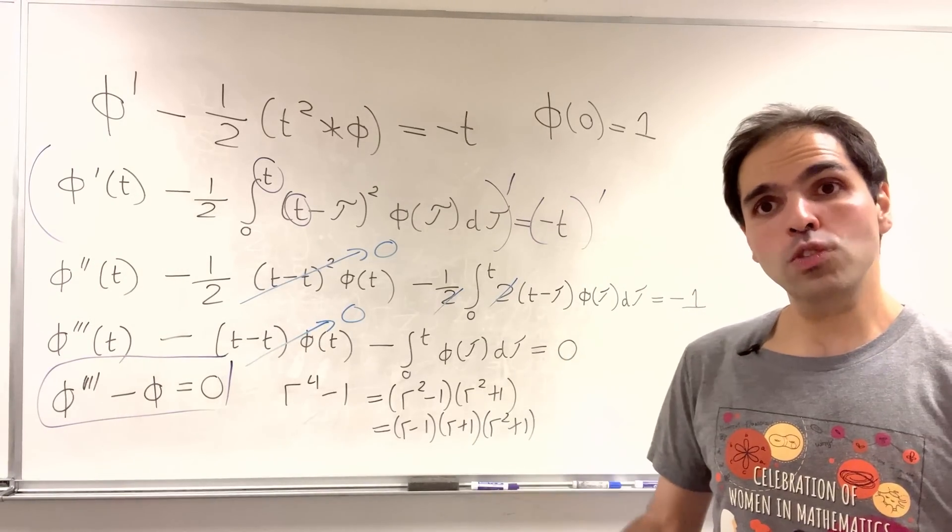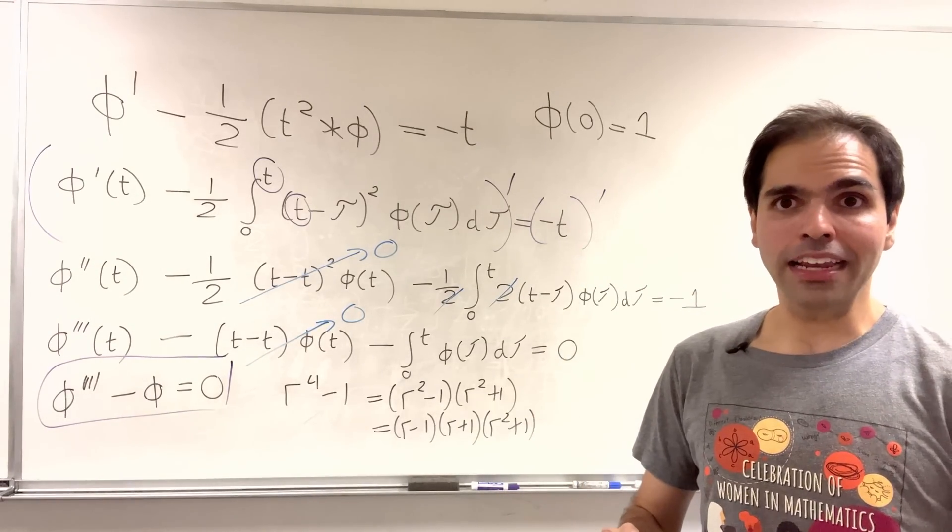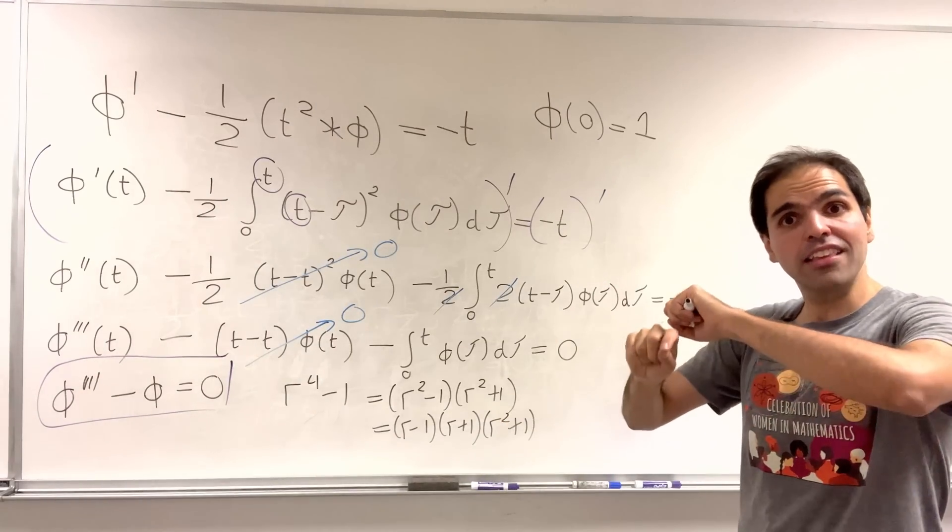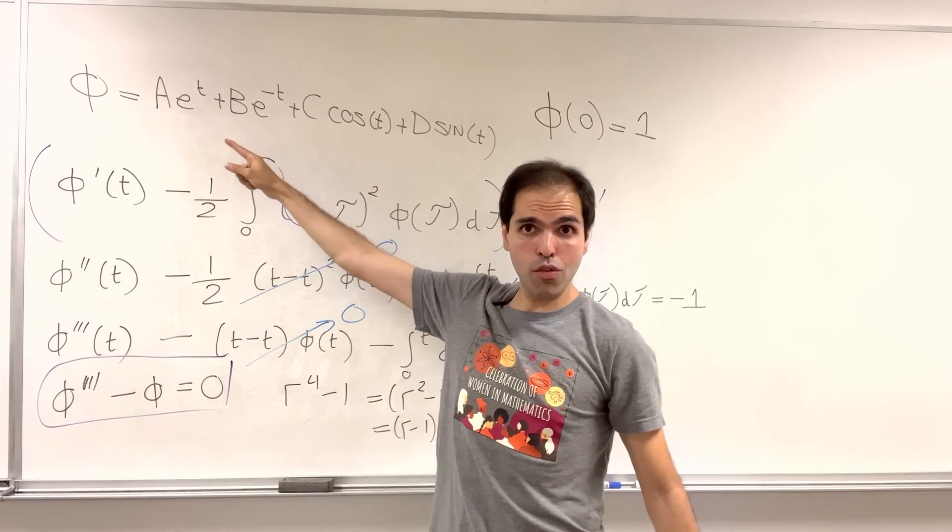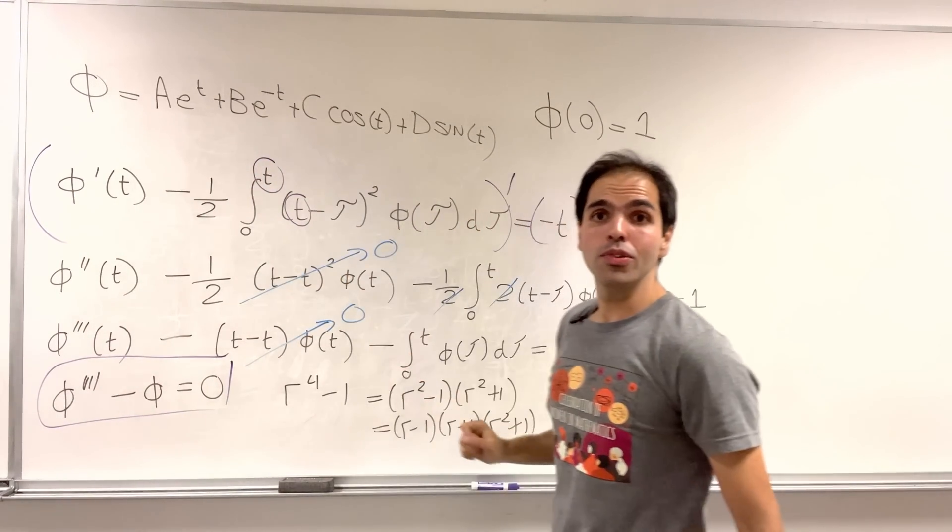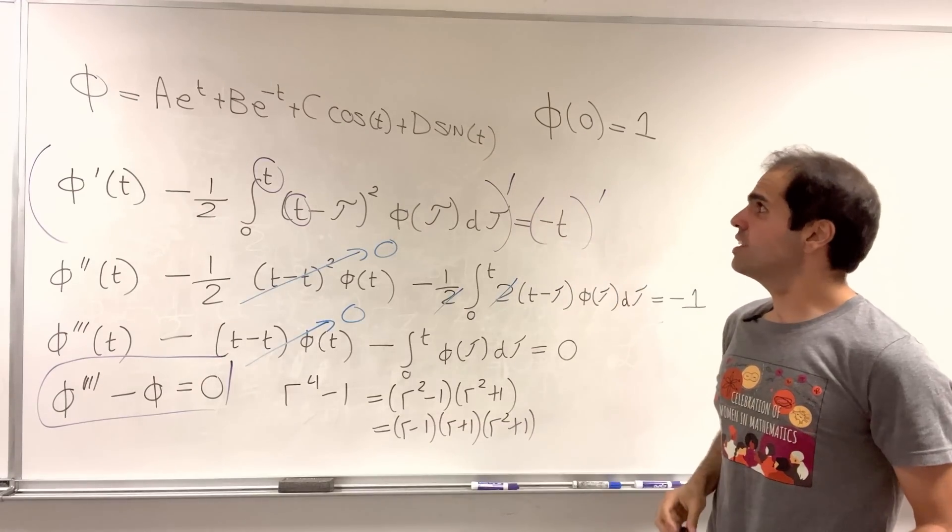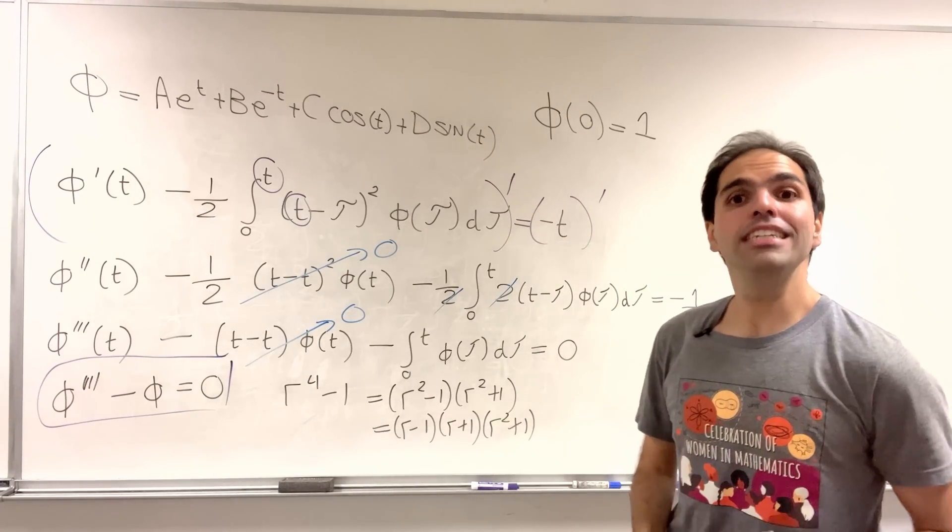And, this one has four roots. One, minus one, i, and minus i. And, in the end, we get the following general solution. Phi is ae to the t for the root one, be to the minus t plus c cosine of t plus d sine of t.